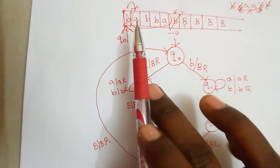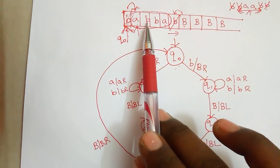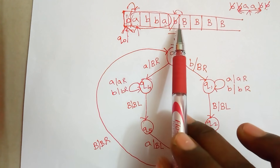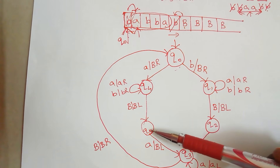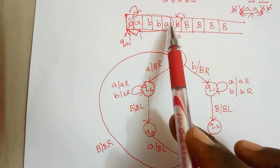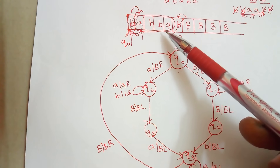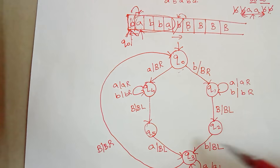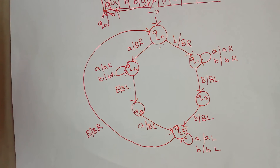So Q0 on input A cancels A to blank and goes to Q4; in Q4 we keep moving right until the blank symbol, then make a left move; if the input there is A, we cancel it, and this procedure repeats recursively for all elements. Now we need to define the accepting criteria. There are two possible accepting conditions for a palindrome string.